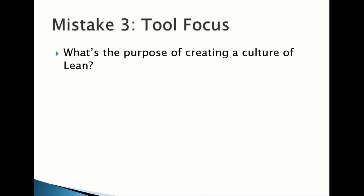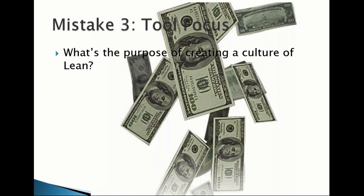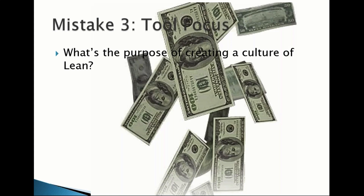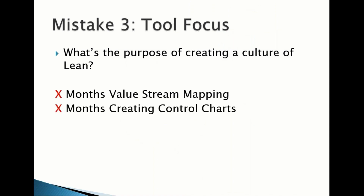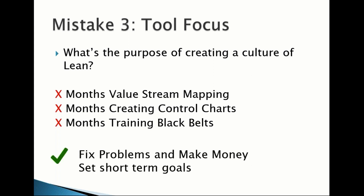Mistake number three: tool focus. The purpose of lean culture is ultimately to make money. Spending months value stream mapping or creating control charts won't make money directly. We should do these things, but do them fast. Focus on short-term wins — small kaizen events that fix problems quickly.